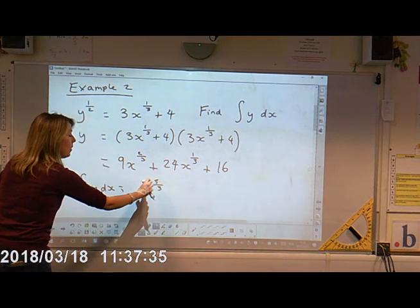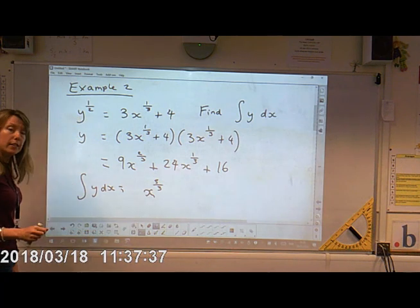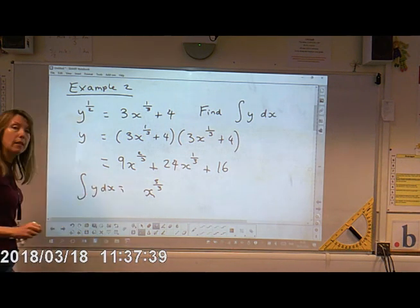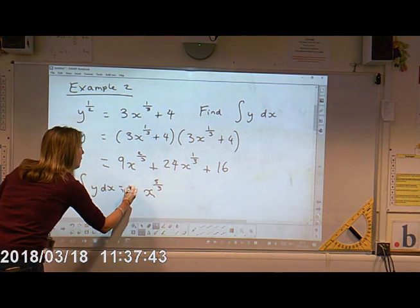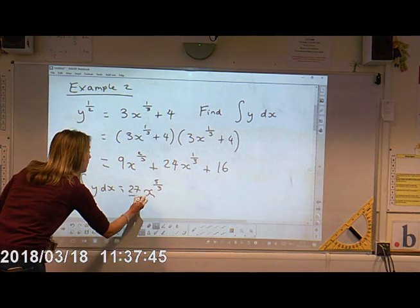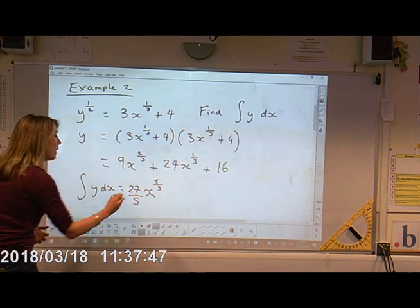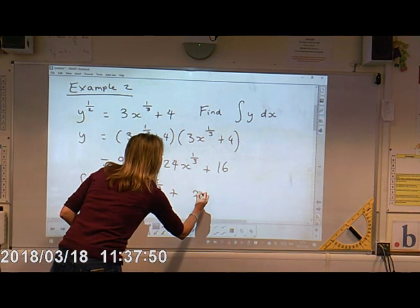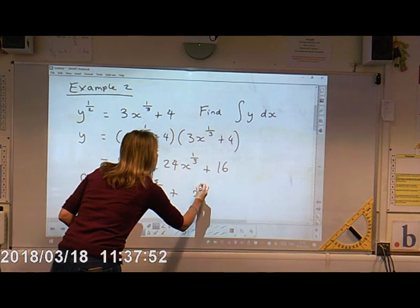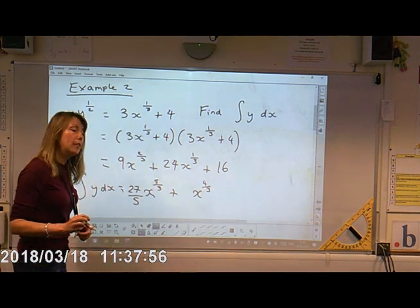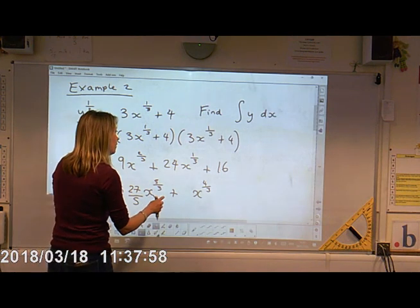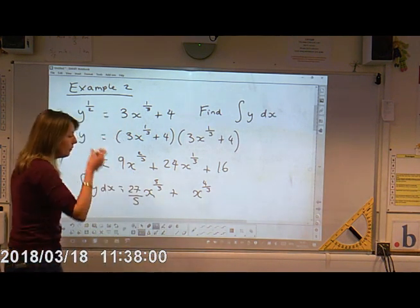Now, I'm going to take the reciprocal of this, so three fifths and times that by nine. So nine times three is 27, divided by five, plus one third plus one gives me four thirds. The reciprocal of four thirds is three quarters.